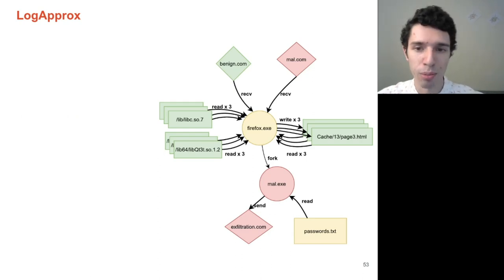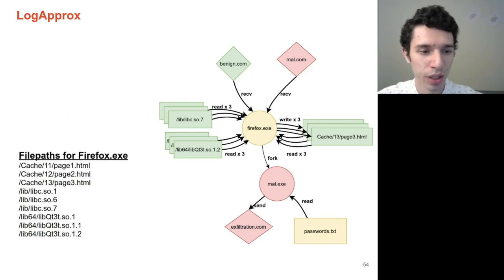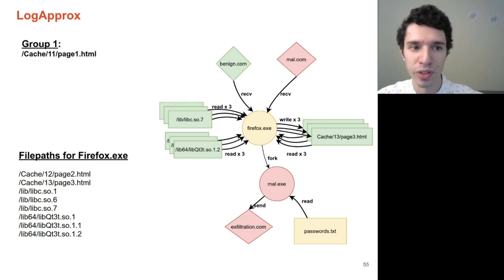Let's now look at how LogApprox actually performs this reduction. For a given audit log and for each process within that audit log, LogApprox will create a list of full file paths for every file that was involved with IO in that particular process. LogApprox will then begin creating groups out of these files. It will start with a single lone file and create a single group.